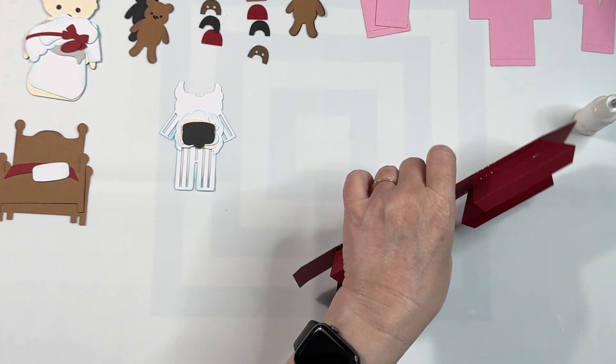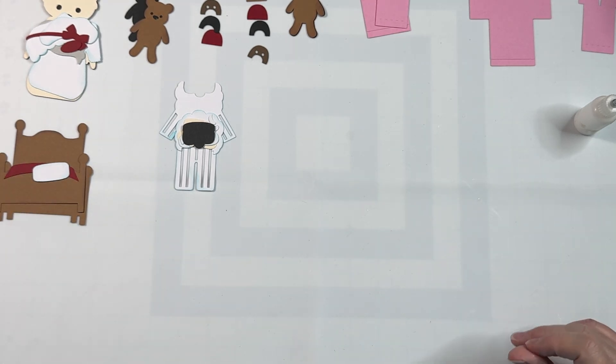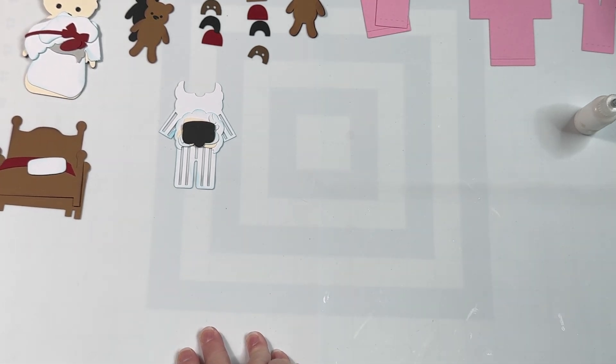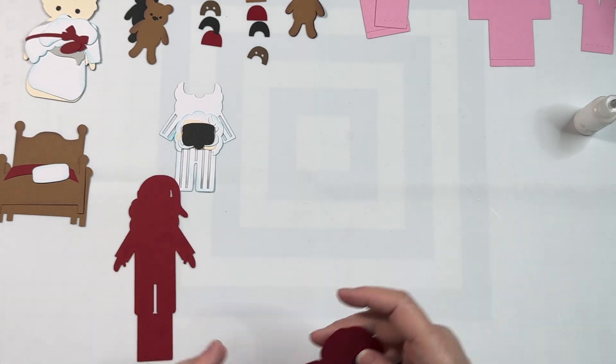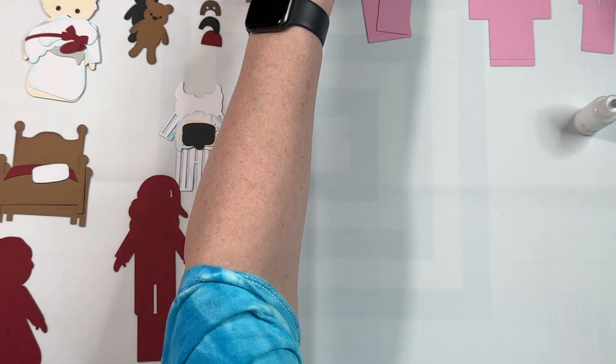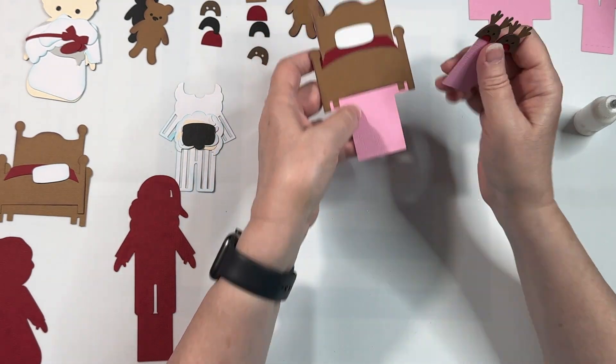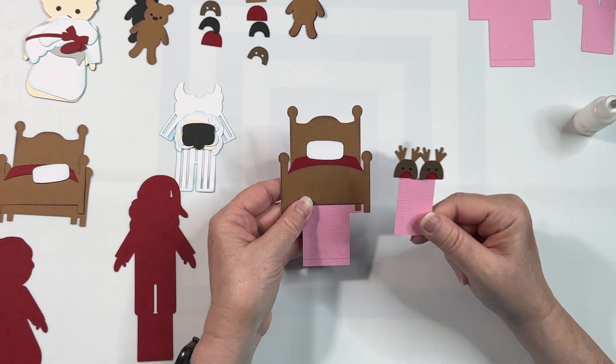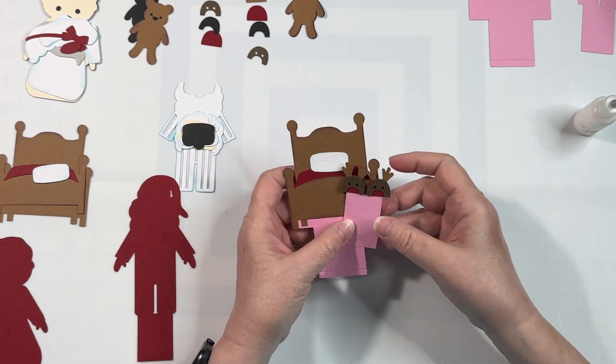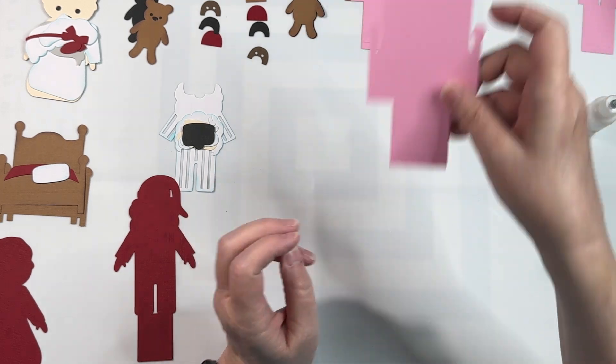And then I am going to set this aside and let it dry while we work on the rest of the pieces. So you have a bed insert. And then there's an insert with the deer slippers. So let's start with the bed.